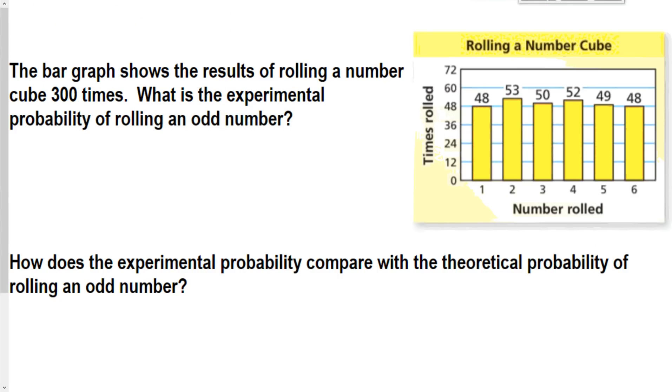All right. We just got one. This last one is going to be kind of comparing this theoretical versus experimental together. So here's a different bar graph. Again, showing rolling a number cube. This time it's rolled 300 times. So, what's the experimental probability of rolling an odd? So, again, I'm going to look at 1, 3, and 5.